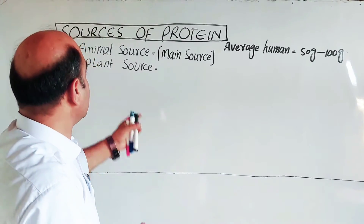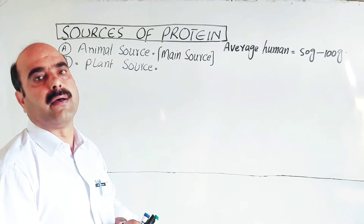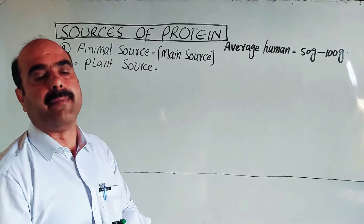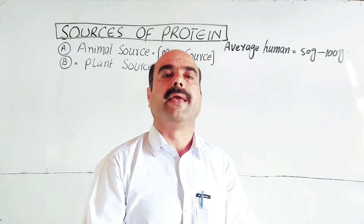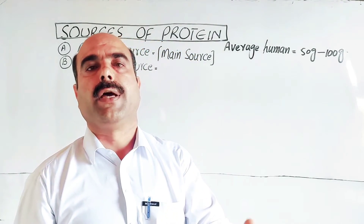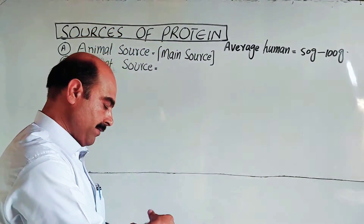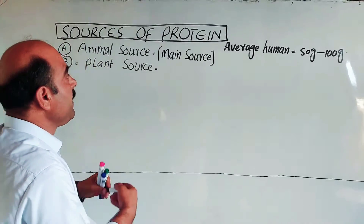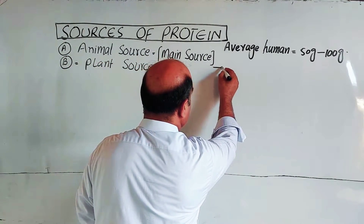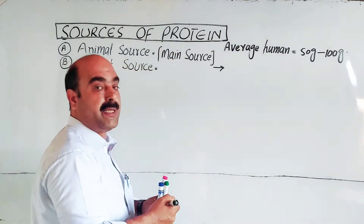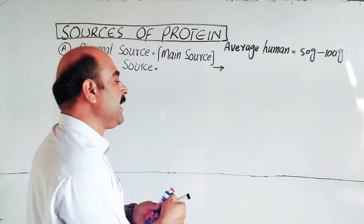Now let's discuss the animal sources. Animals provide proteins. Among the animal sources, the main ones include terrestrial animals. Eggs are one of the main sources of protein.